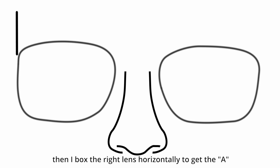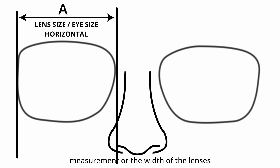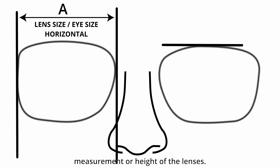Then I box the right lens horizontally to get the A measurement, or the width of the lenses. Then I box the left lens vertically to get the B measurement, or height of the lenses.